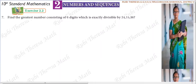Time for Exercise 2.1. Find the greatest number consisting of 6 digits which is exactly divisible by 24, 15, and 36.